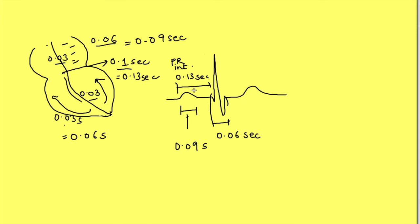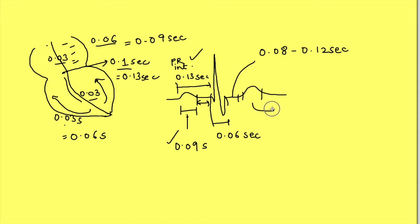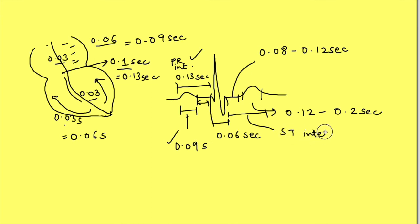To calculate PR segment, just subtract P wave duration from PR interval and you get 0.04 seconds. You only need to remember two more values: ST segment duration is 0.08 to 0.12 seconds, and T wave duration is 0.12 to 0.2 seconds. Once you know ST segment and T wave durations, you can calculate ST interval by adding the two. Similarly, you can calculate QT interval duration as well.